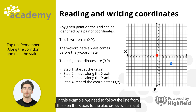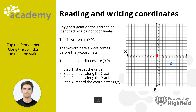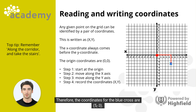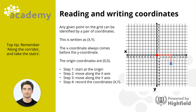In this example, we need to follow the line from the 5 on the x-axis to the blue cross, which is at minus 3. Therefore, the coordinates for the blue cross are (5, minus 3).